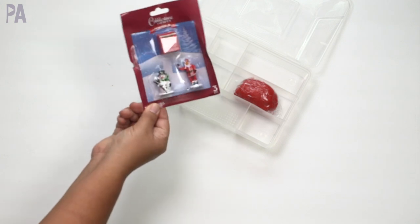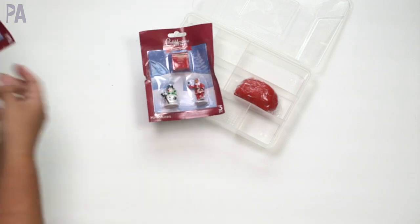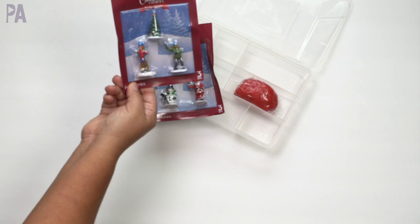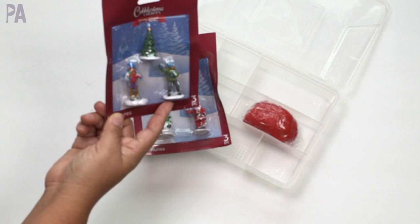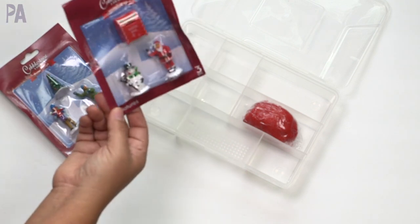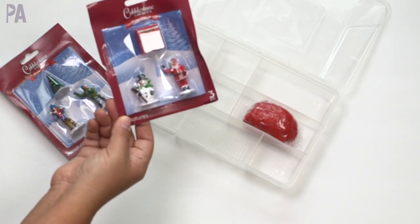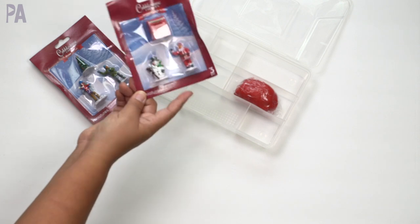So you can get this little set of three characters. In fact, I have two that they had. So this one has a Christmas tree in it. There's a little person holding a child and then another person looks like throwing a snowball. And then this one has a little Santa mailbox. How cute. A little snowman and Santa.